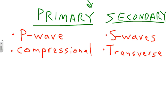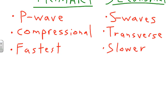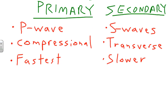Because P waves are compressional, they're a lot faster — the fastest of any seismic wave. P waves travel up to about 21,000 miles per hour, where S waves travel around 10,000–12,000 miles per hour. So P waves are fast, S waves are slower. They also differ in what materials they can travel through, which we'll look at next.